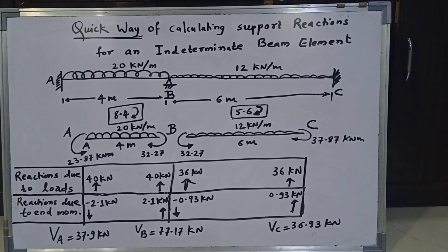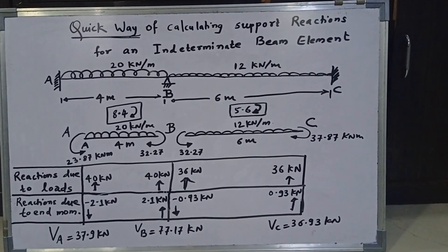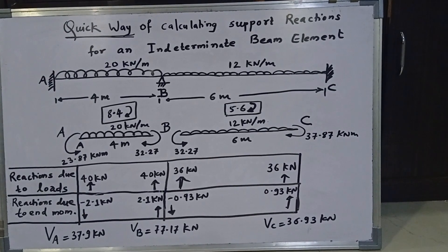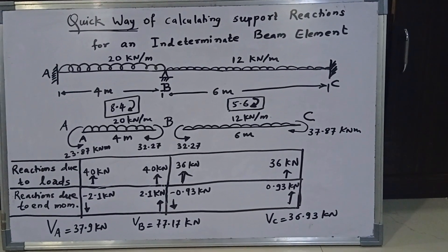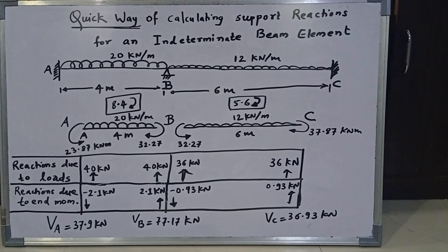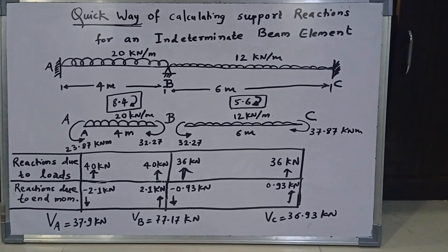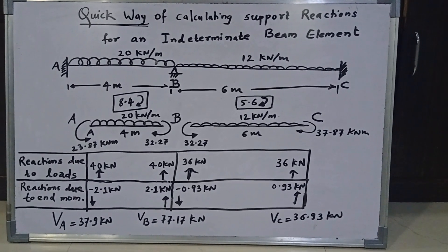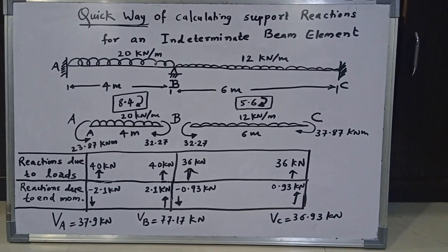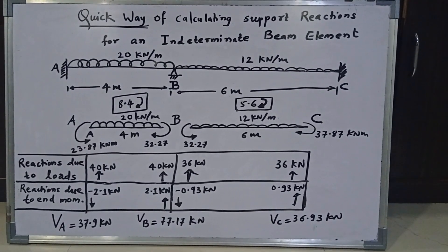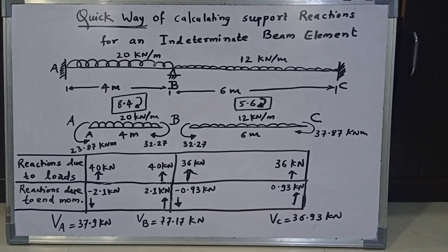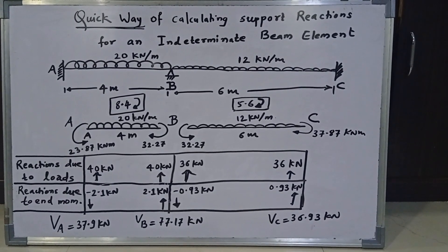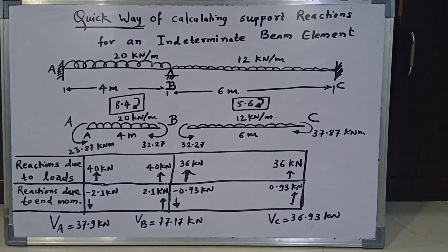Applying the similar concept to span BC, again looking at the bottom row, it is very clear that span BC is subjected to clockwise 37.87 kN meter minus anticlockwise 32.27 kN meter. Therefore, a net moment of 5.6 kN meter is acting on span BC, which is trying to turn span BC in clockwise direction. Therefore, again, as I explained in span AB, the same concept applies here. So B and C, the reaction should be such that they should set an anticlockwise couple to resist the net couple or net moment of 5.6 kN meter.